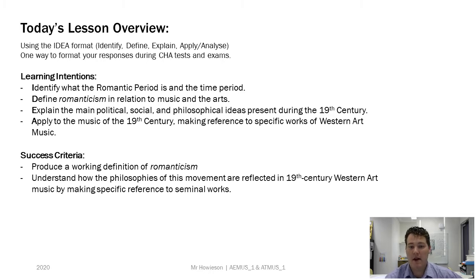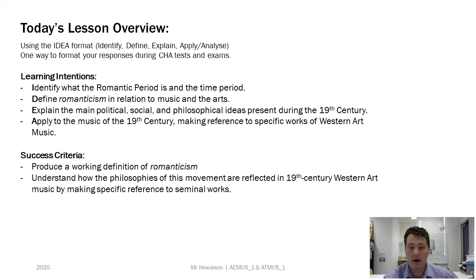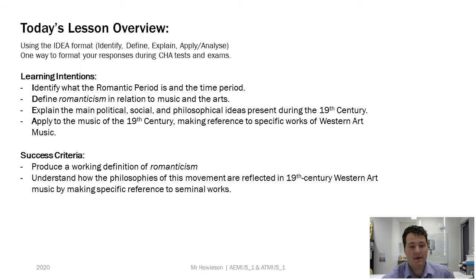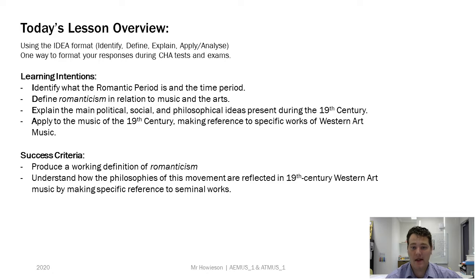We're going to identify what the Romantic period is and the time period it occurred. We'll define Romanticism in relation to music and the arts, explain the main political, social and philosophical ideas present during the nineteenth century, and apply this to the music of the nineteenth century, making reference to specific works of Western art music. Your success criteria is to produce a working definition of Romanticism — one or two sentences you can put at the top of your CHA tests — and look at the philosophies of the movement and how they're reflected in music-making of the nineteenth century.